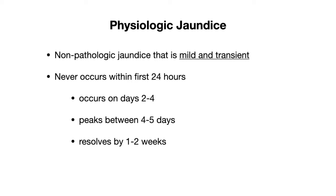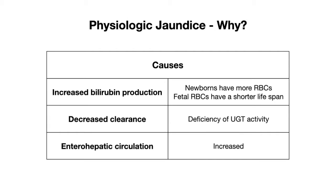One reason for physiologic jaundice is increased bilirubin production. This is because newborns have more red blood cells, typically a hematocrit between 50 to 60 percent, which is a lot more than in adults. Additionally, fetal red blood cells have a shorter lifespan, so you have increased turnover and increased production of bilirubin as a result.